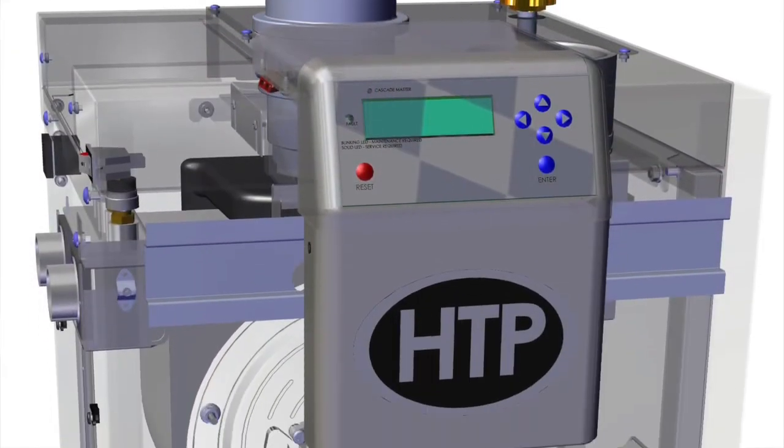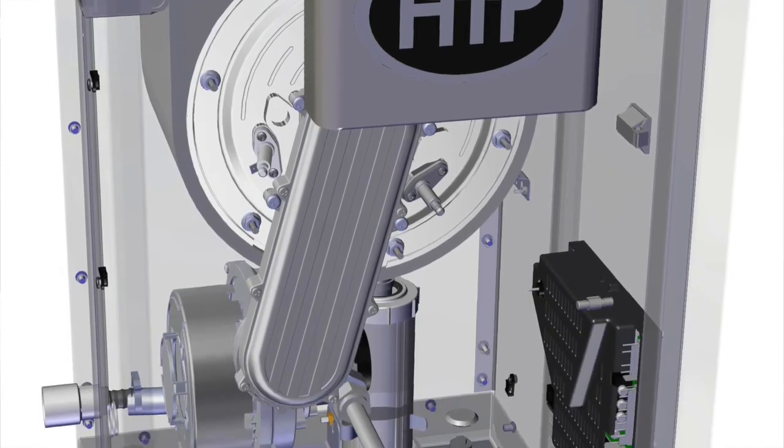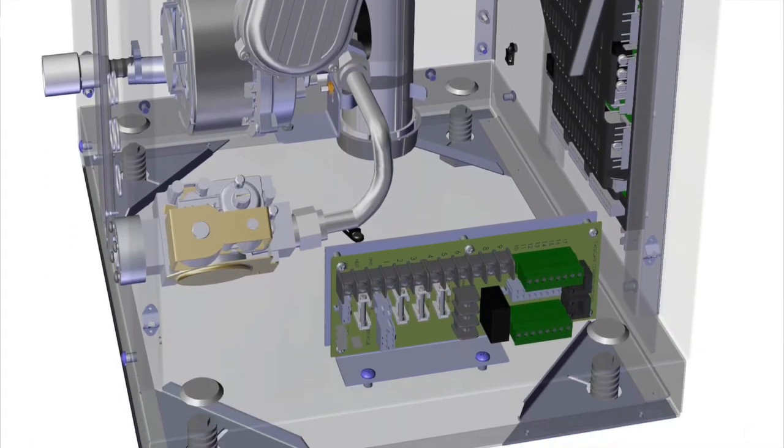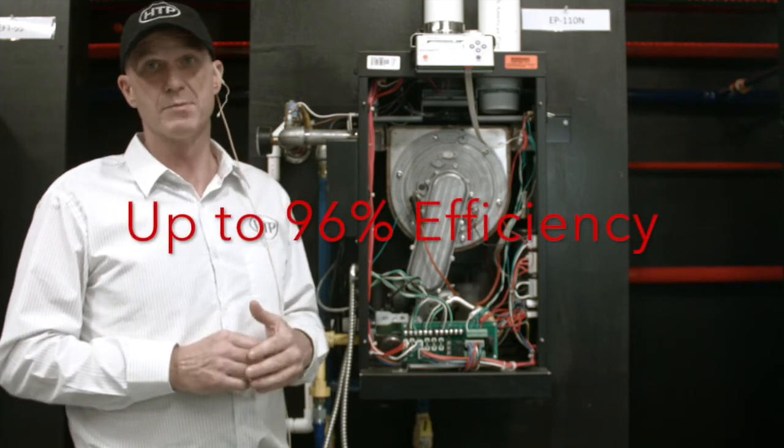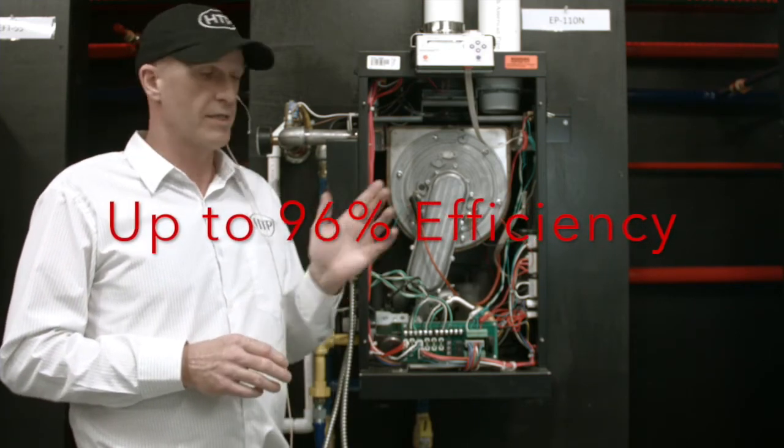So again, available in seven different model sizes, wall, floor, whichever you like, liquid propane, natural gas, a full 10 to 1 turn-down ratio, up to 96% thermal efficiency, that's the Elite Premier.